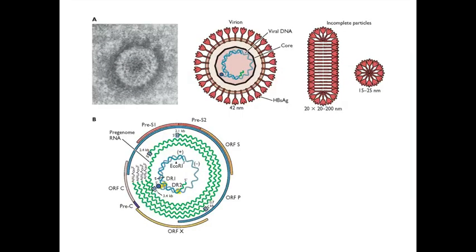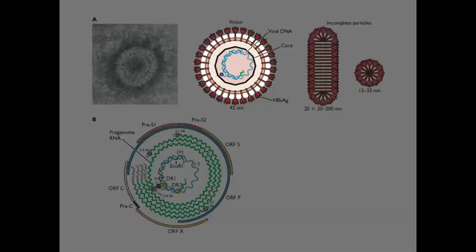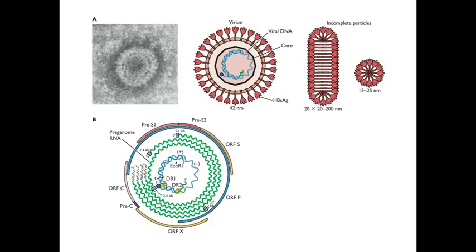The last virus I want to talk about is hepatitis B, which is an enveloped virus. It has an icosahedral core that contains this unusual double-stranded DNA genome. Remember, it's gapped, has a protein stuck on it and a piece of RNA. Today we're going to find out why it's such a weird genome.